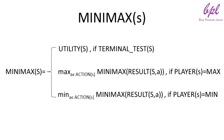This is how minimax(s) will be calculated. Minimax(s) equals utility(s) if the terminal test of s is true. Minimax(s) equals max over a belonging to actions(s) of minimax(result(s, a)) if player(s) equals max. Minimax(s) equals min over a belonging to actions(s) of minimax(result(s, a)) if player(s) equals min. This definition of optimal play for max assumes that min also plays optimally, and it maximizes the worst-case outcome for max.